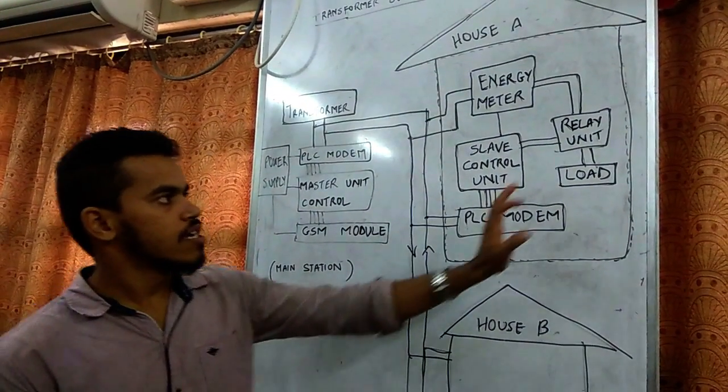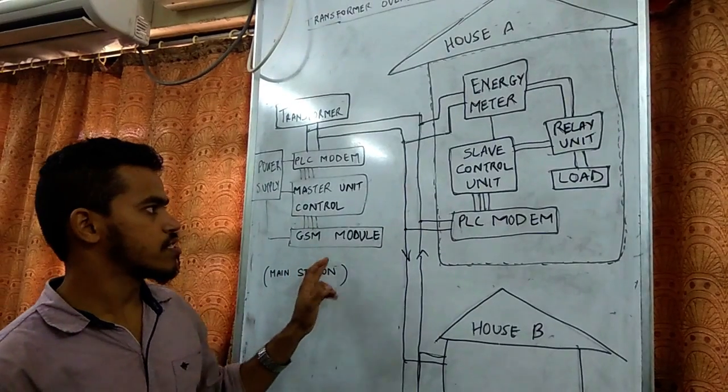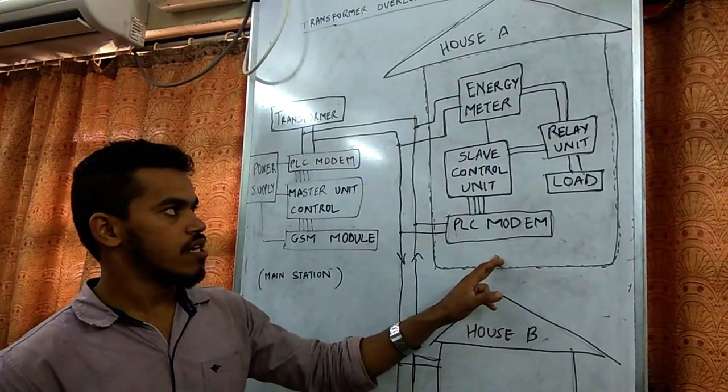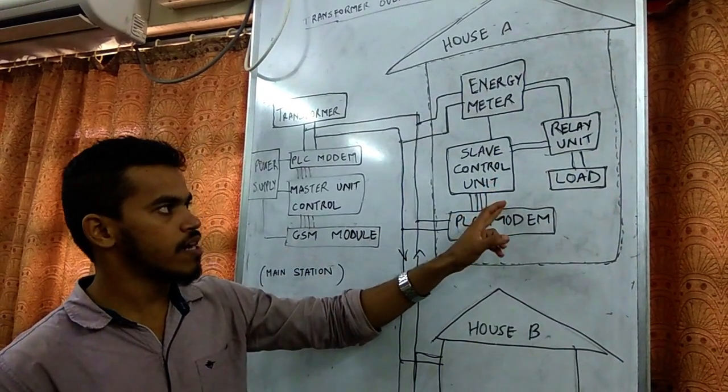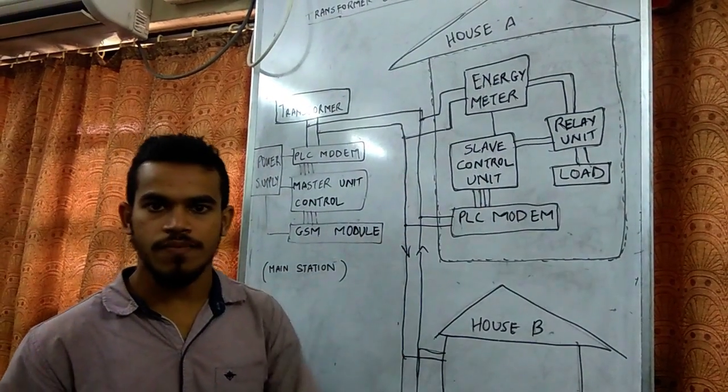Once the third message is sent, a command is given from the main station to the slave in order to cut the power supply. It will directly give a command to the relay to cut the power supply.